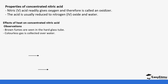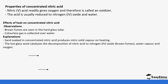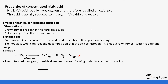When you look at the effects of heat on concentrated nitric acid, you notice that brown fumes are usually seen in the test tube that you are heating, and then colorless gases are driven off. Sand soaked in concentrated nitric acid when heated produces nitric solid vapor. On heating, the hot gases catalyze the decomposition of nitric acid to nitrogen dioxide, water vapor, and oxygen. This is the equation for the decomposition of nitric acid: it forms nitrogen dioxide, water, and oxygen.